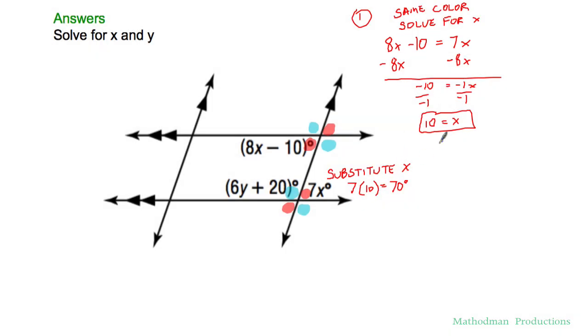After that, I can plug in this value for x right here 7 times 10 to get this angle measurement to equal to 70. How's that going to help me? Well if this is 70, this one makes a linear pair with this blue one. So this one's got to be 110.